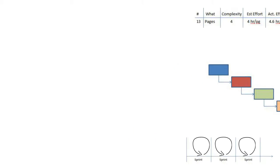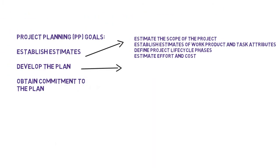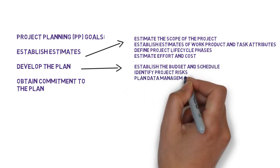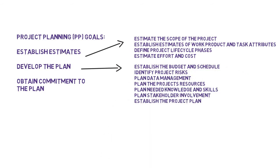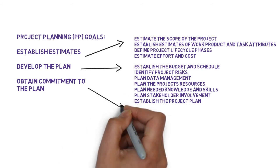Moving from estimates to plan is both straightforward and familiar. We need to establish the budget and schedule, identify risks, plan for what project data we'll collect and keep such as metrics, documents, meeting minutes, and the like, what resources we need both human and otherwise, plan how we'll keep our stakeholders in the communication and participation loops, and finally assemble the plan.